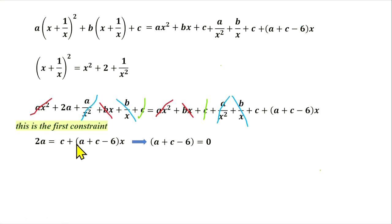Then if this term is 0, what remains is 2a equals c. This is second equation for a and c. So we will have the system of two equations. The system is very simple to solve.